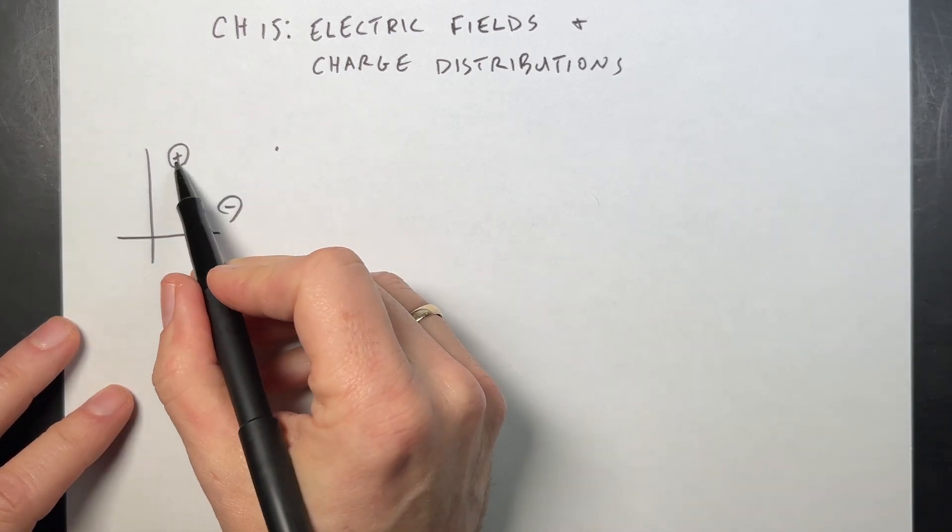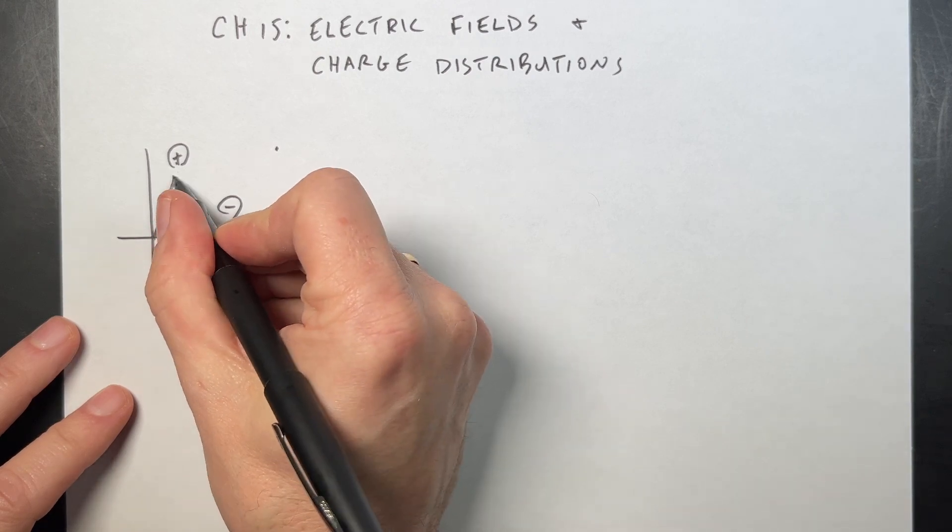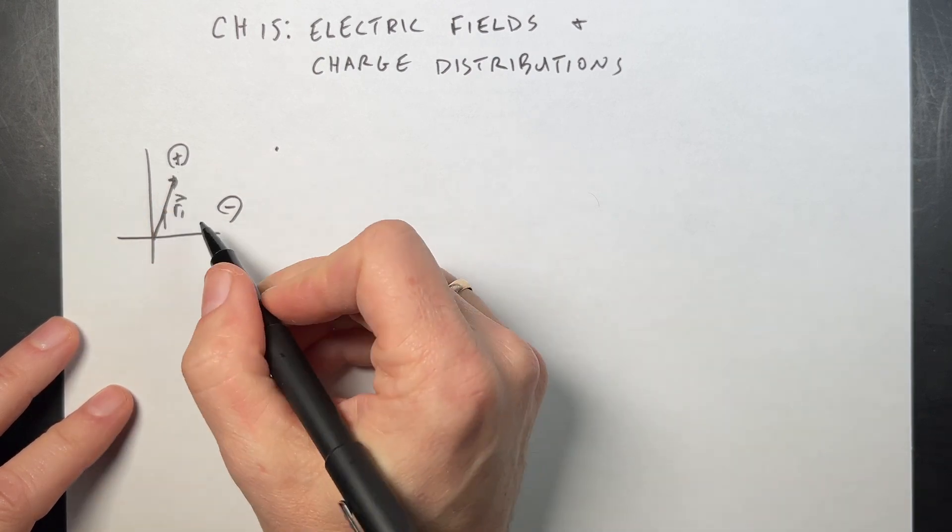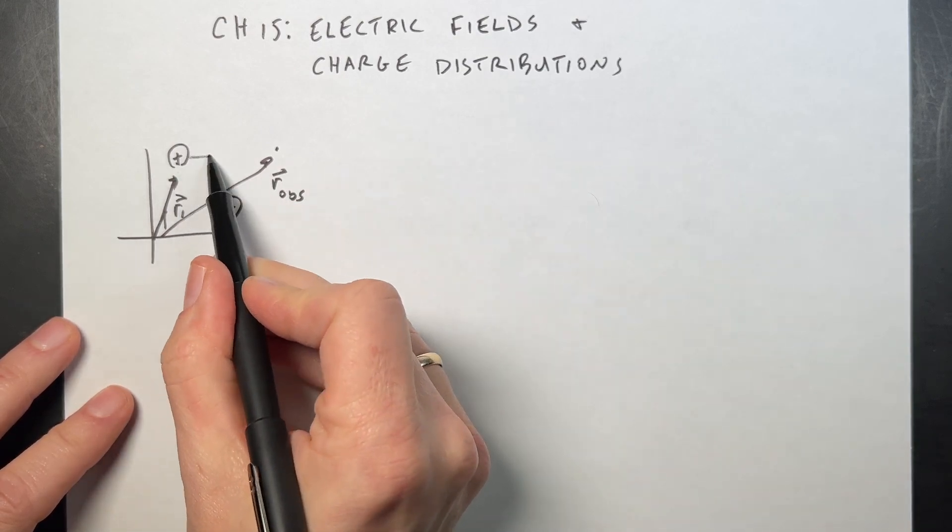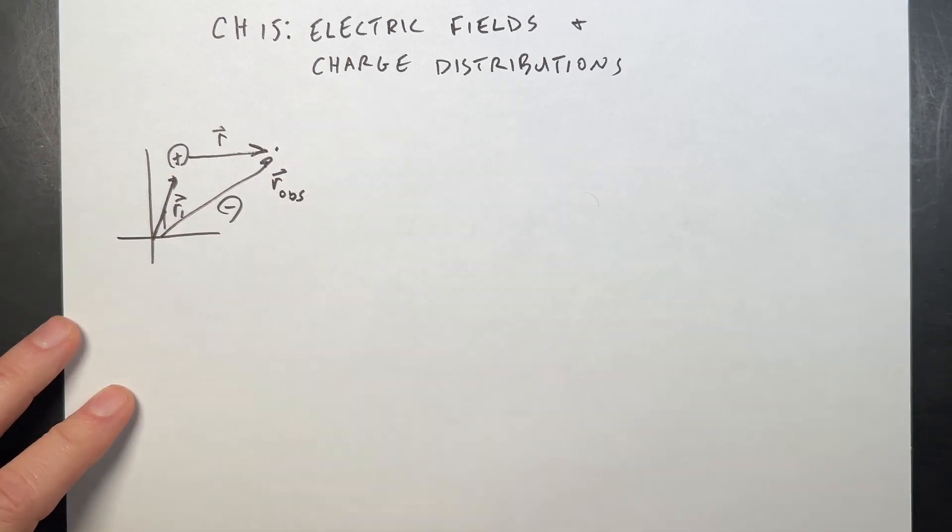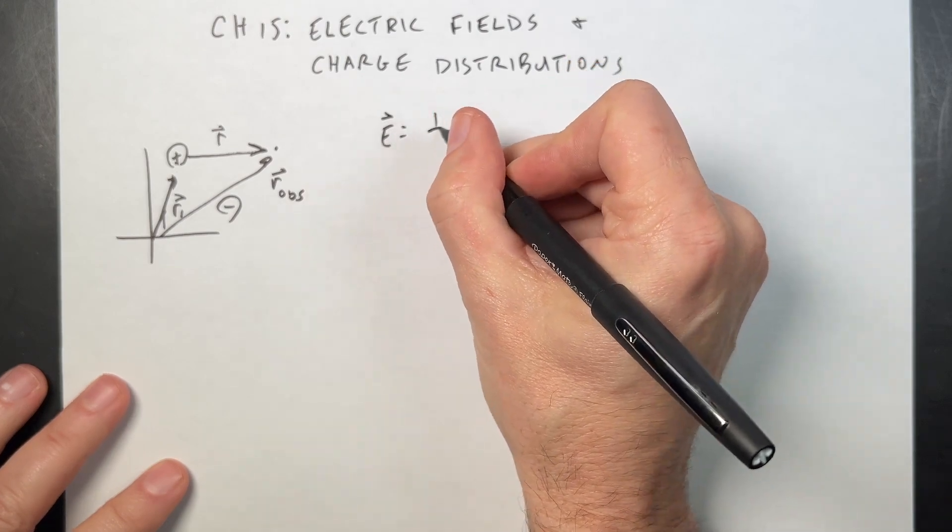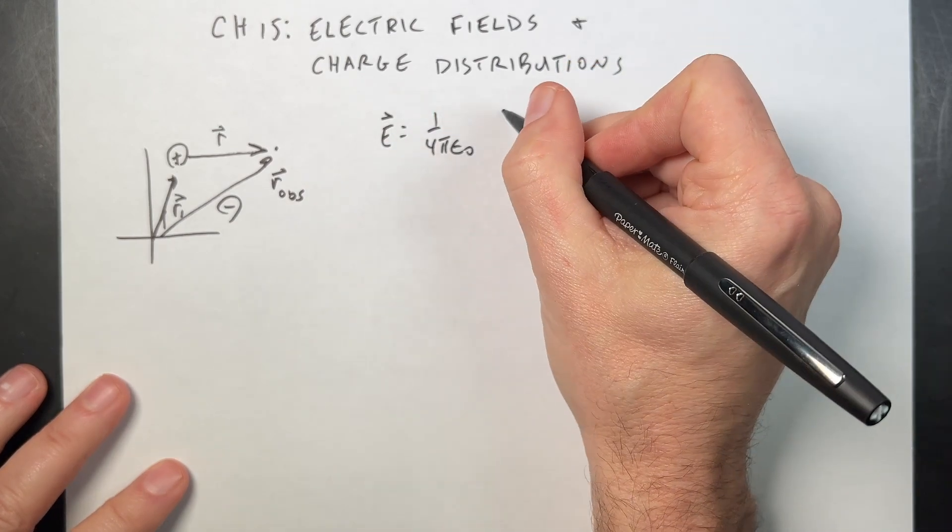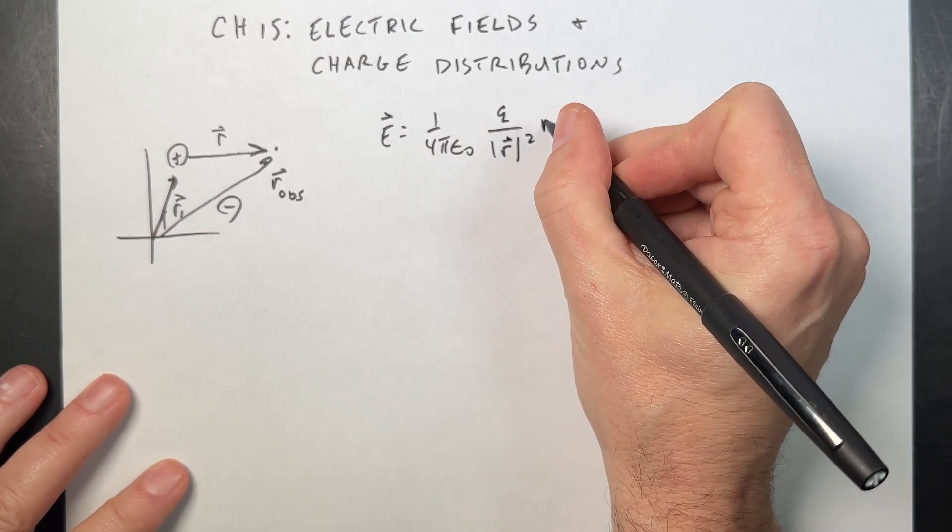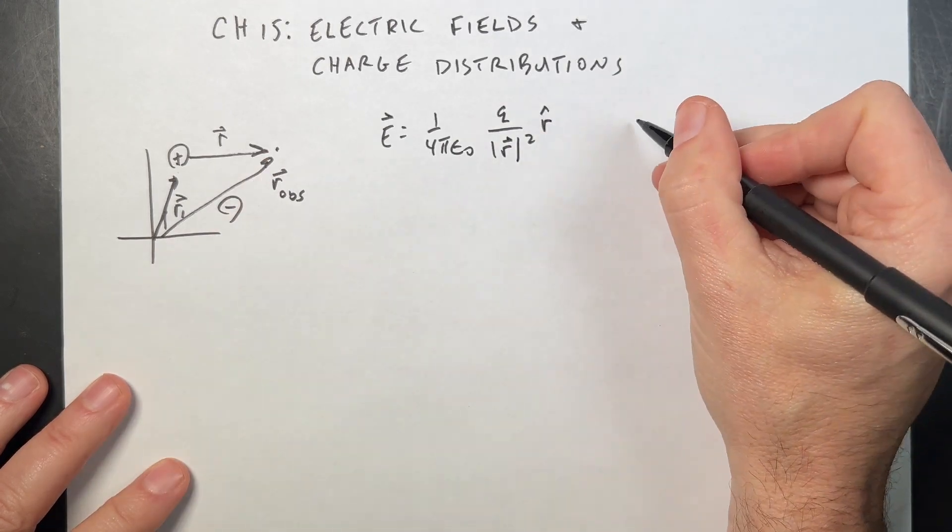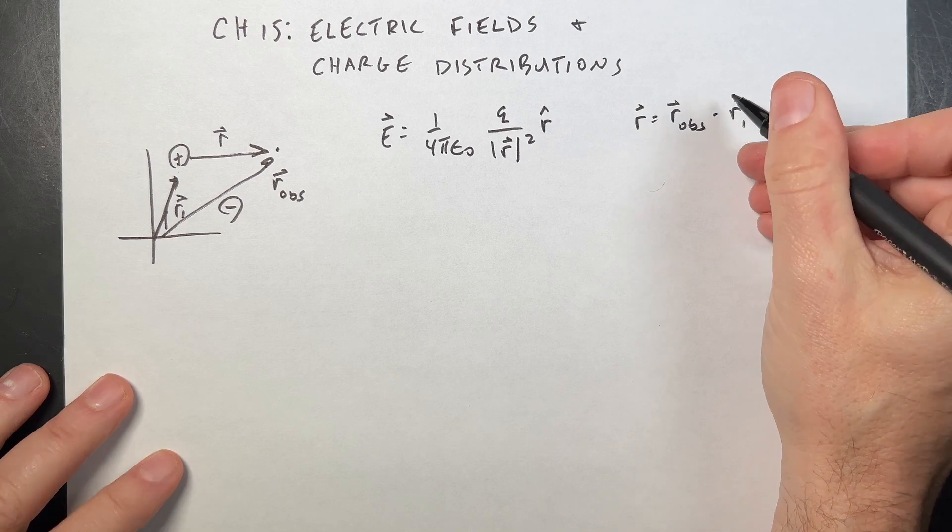In order to do that, I need to find the location of that charge, the location of the observation. Let's call that R1. Let's call this ROBS. And let's call this the vector R. Then I can find the electric field due to that one charge, as E equals 1 over 4 pi epsilon naught Q over the magnitude of R squared R hat. And so R is going to be ROBS minus R1. That's the vector from there to there.